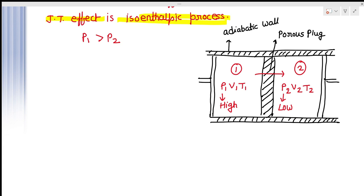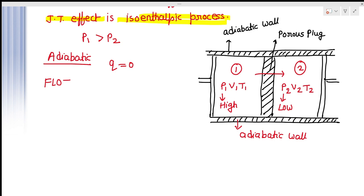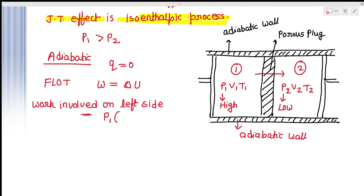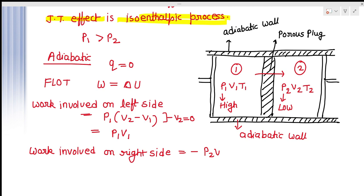This process is adiabatic because the system is surrounded by adiabatic walls, so Q will be equal to zero. From the first law of thermodynamics, W will be equal to delta U. The work involved on the left-hand side will be given by P1(V2 minus V1), and since V2 here will be equal to zero, the work involved is equal to P1·V1. Similarly, the work involved on the right-hand side will be equal to minus P2·V2. So the net work will be given by minus P2·V2 plus P1·V1.